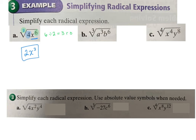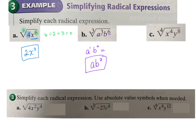For the next one with all variables: using the cube root (index 3), divide each exponent by 3. Exponent 3 divided by 3 gives a to the first power; exponent 6 divided by 3 gives b squared. You don't need to write the exponent of 1, so the answer is ab².